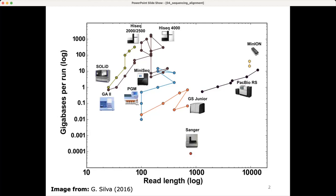Read length is important for whether you can, for example, generate haplotypes in the context of variant analysis or whether you can assemble genomes. Throughput is usually very much related to the cost per base — how much sequence you can generate for a thousand euros, for example. As you can see, there are many different sequencing technologies.